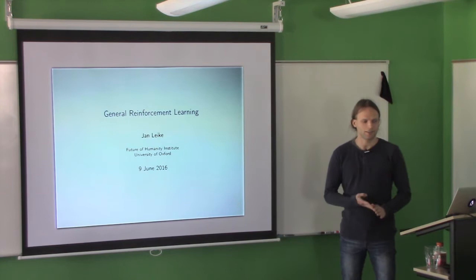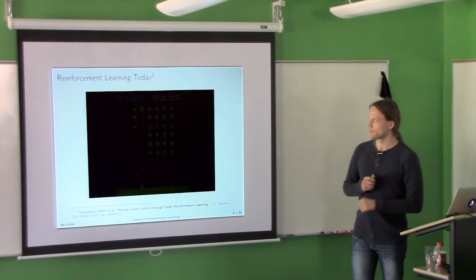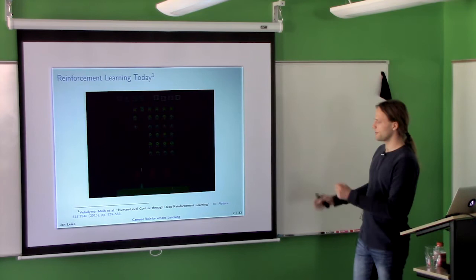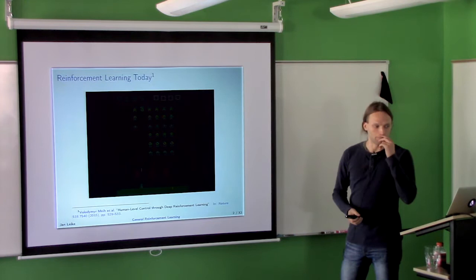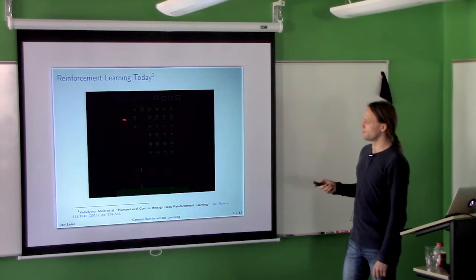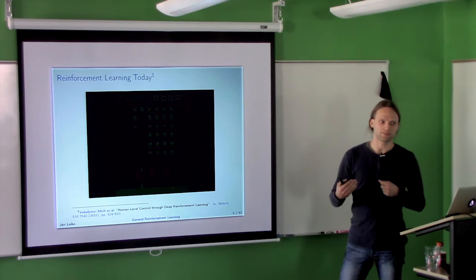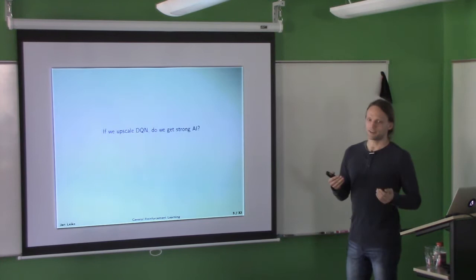I want to connect this stuff more to the kind of things being done today. I'm sure all of you have seen this — this is the game Space Invaders, and particularly this is a screenshot of DQN playing this game. DQN is an algorithm that combines neural networks with Q-learning to learn to play Atari games. The title says reinforcement learning today, but this is almost three years old now, and you can play a lot more sophisticated games. In my opinion, this is the closest thing we have today to strong AI.